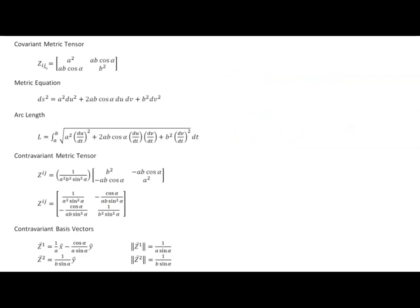Therefore, the only challenge we really have is the forms where we include the metric tensor terms. Let's talk first about Z_ij U^i V^j. What this formula tells us is that we need to iterate through all of the elements of our covariant metric tensor and combine them with the appropriate vector components. So we're going to be using contravariant vector components coupled with the covariant metric tensor, and we just need to iterate through each one of these elements.